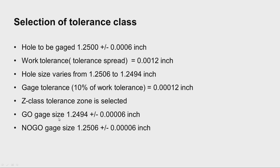The go gauge size will be equal to the lower size of the hole plus the gauge tolerance. So the go gauge size will be 1.2494 ±0.000006 inch. For the no-go gauge, the maximum size of the hole is 1.2506 ±0.000006 inch. This is how we select the tolerance class and design the go and no-go sides of a plug gauge or ring gauge.